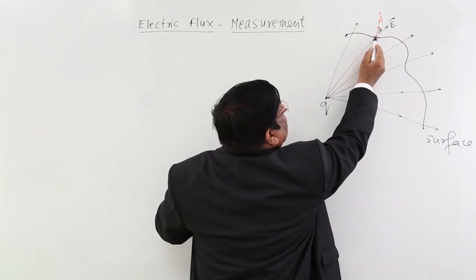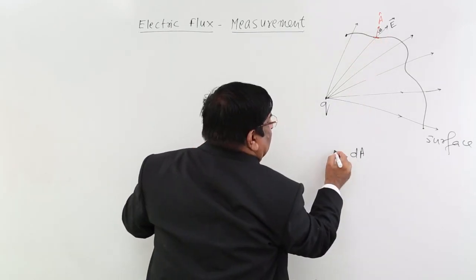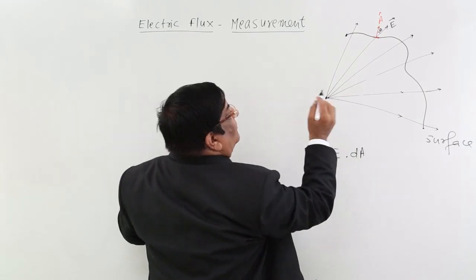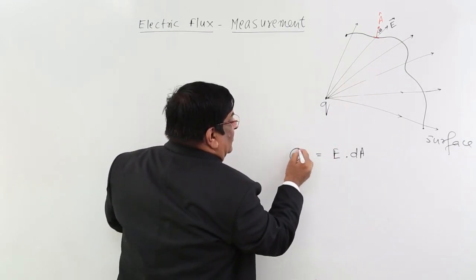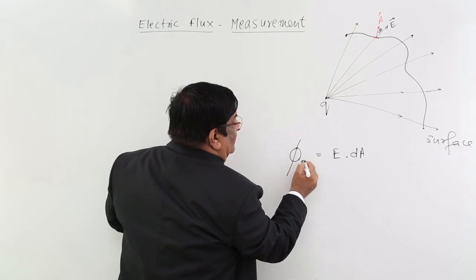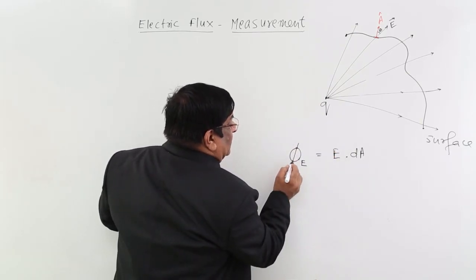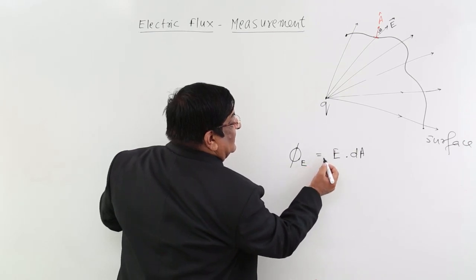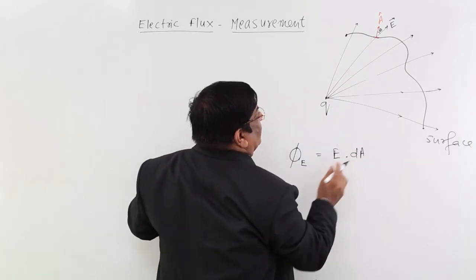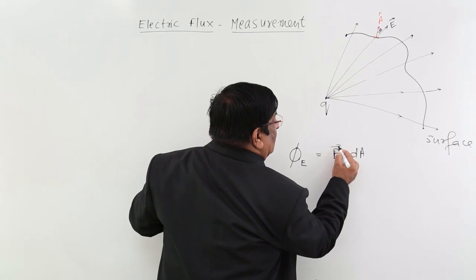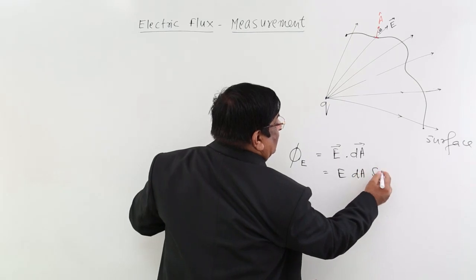Then the flux linked to this very small area dA, this is to be multiplied with value of E here and this gives me a very small flux at this place. If I write this flux by notation phi and make it phi E, electric flux, because later we are going to study magnetic flux also. So this phi E is equal to electric field here multiplied by this very small area dA and if I see the magnitude, this is E dA cos theta.